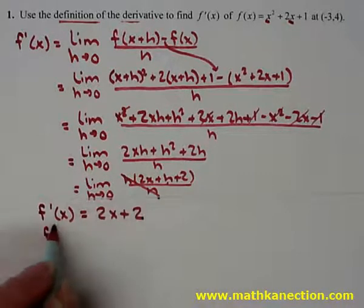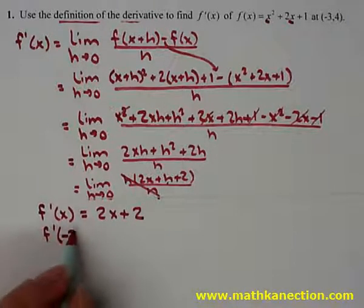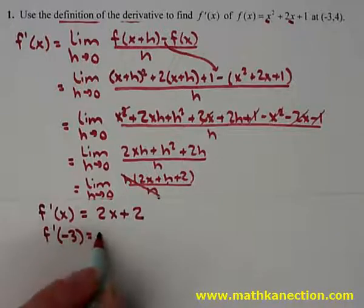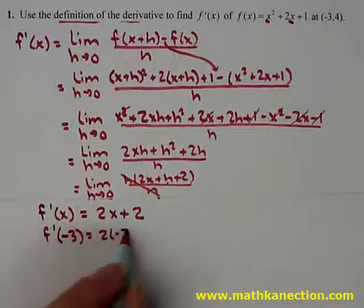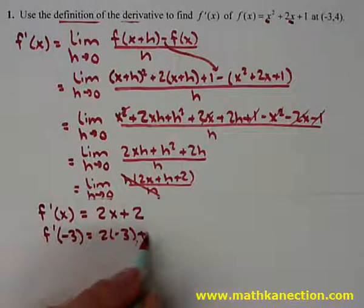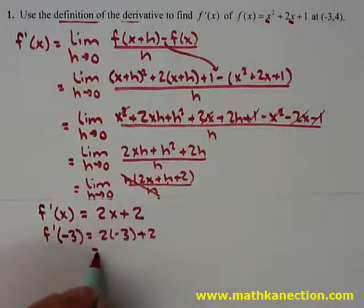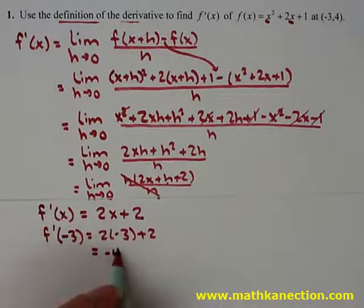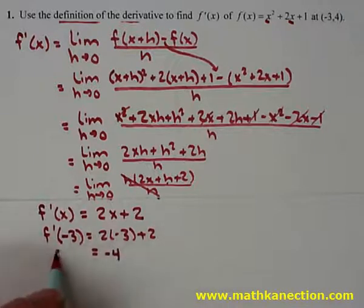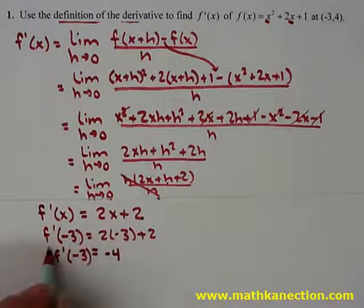We need f prime of x at the location negative 3, so we're placing in negative 3: 2 times negative 3 plus 2, which makes negative 4. So f prime of negative 3 is equal to negative 4.